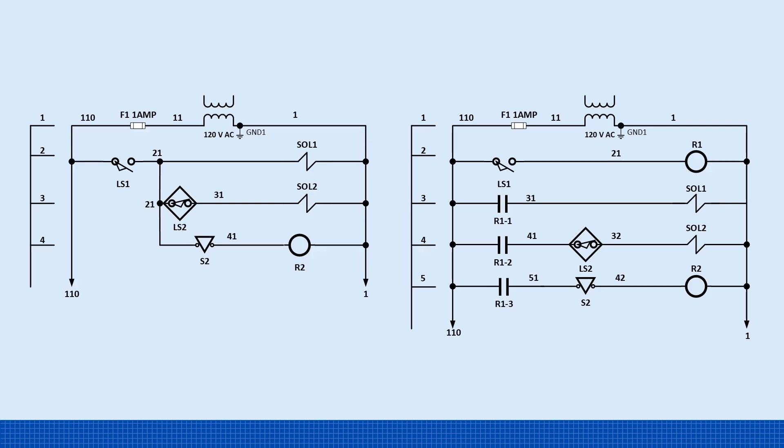Now look at the improved circuit on the right. Here the limit switch LS1 energizes a three PDT relay, R1. Each of R1's three normally open contacts then controls solenoid 1, solenoid 2, and relay 2 separately. This design keeps the schematic clean and well-organized. More importantly, LS1 no longer carries the total current of all three loads, only the coil current of R1.